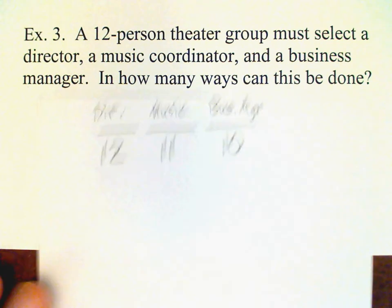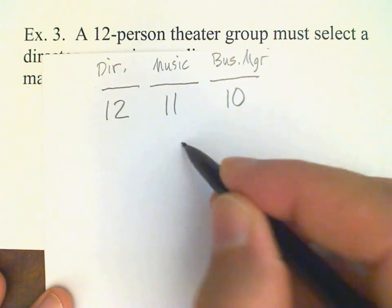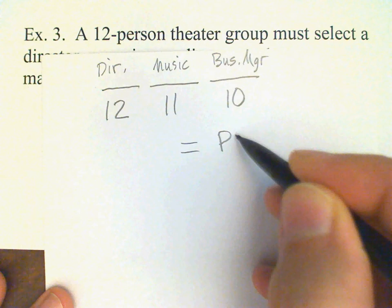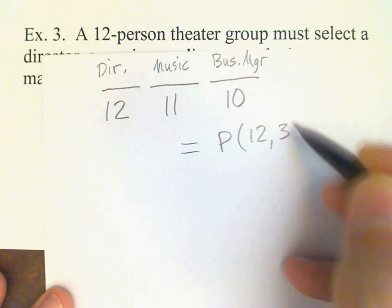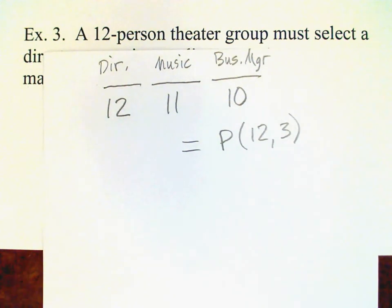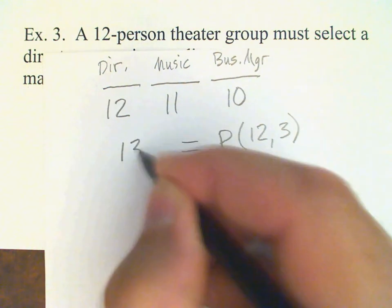So 12 times 11 times 10 — this is P(12,3) — and the answer is 1320.